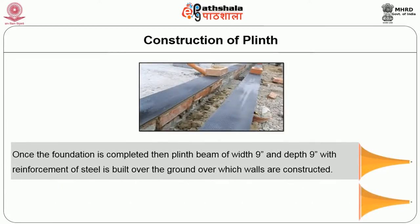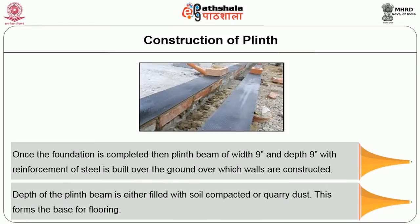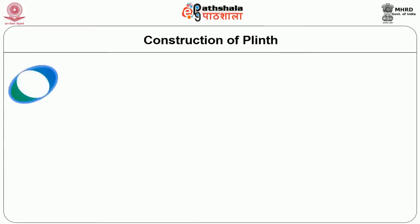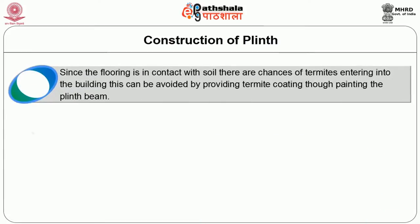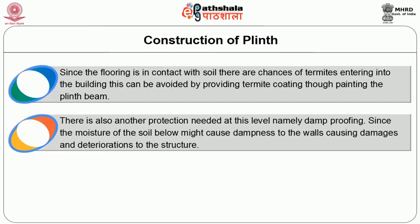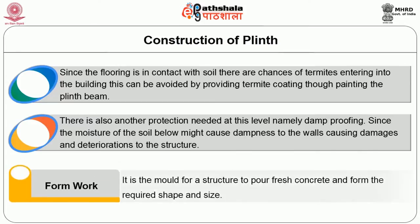Once the foundation is completed, the plinth beam of width 9 inches and depth of 9 inches with steel reinforcement is built over the ground, over which the walls are constructed. The depth of the plinth beam is filled with soil, compacted, or quarry dust. This forms the base for the flooring. Since the flooring is in contact with the soil, there is a chance of termites entering the building, and this can be avoided by providing a termite coating by painting the plinth beam. There is also a need for damp proofing at this level, since moisture from the soil below might cause dampness to the wall, causing damage and deterioration to the structure.